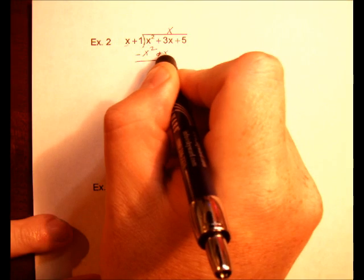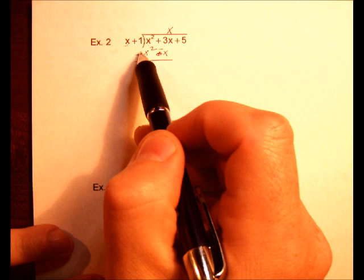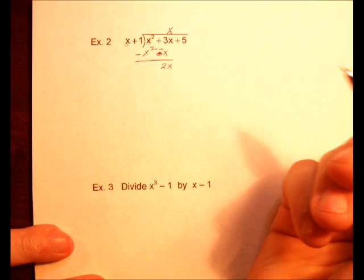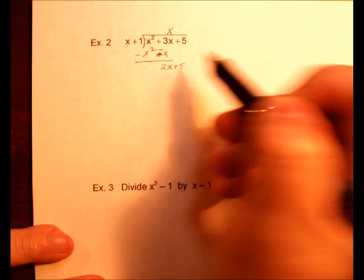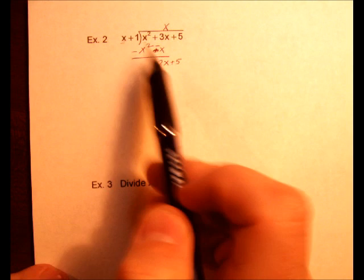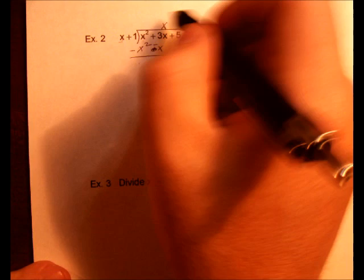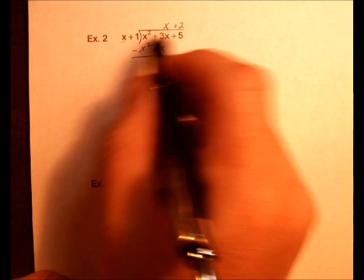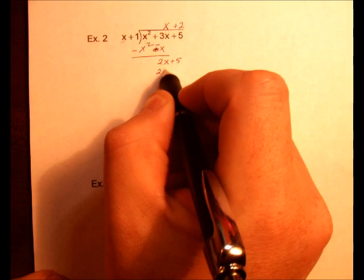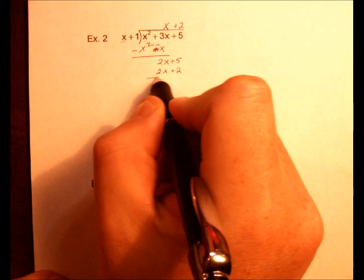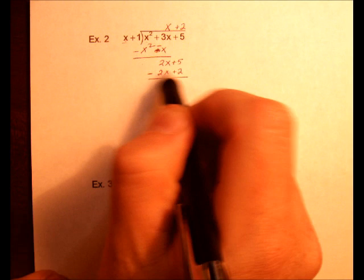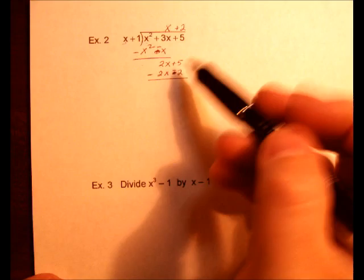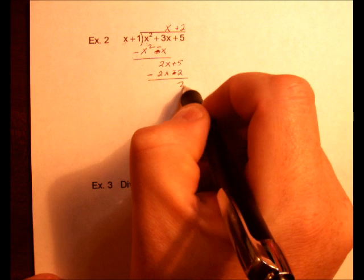Subtract those values, and I'll change those signs. So x² minus x² is 0, 3x minus x is 2x. Drop down the 5. Same process. x times what gives me 2x? Of course, that would be a positive 2. And multiply x times both of those would give us 2x + 2. Let's subtract those values. 2x minus 2x is nothing, 5 minus 2 gives me 3.